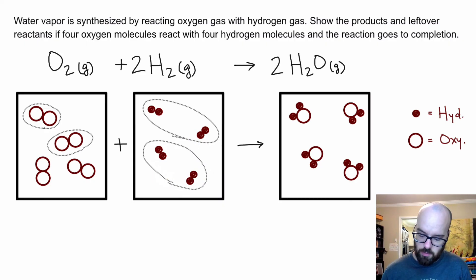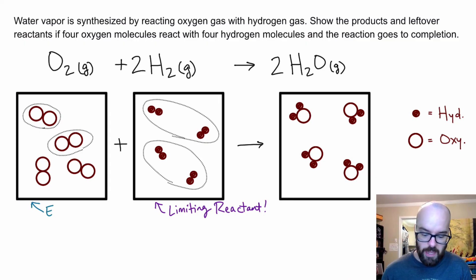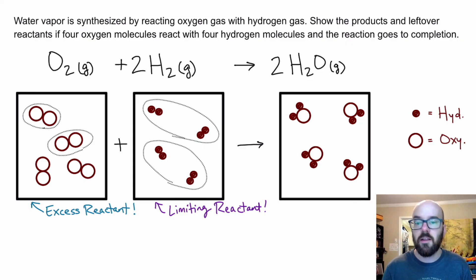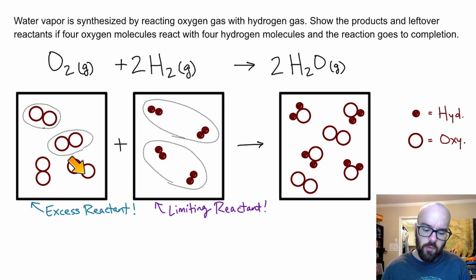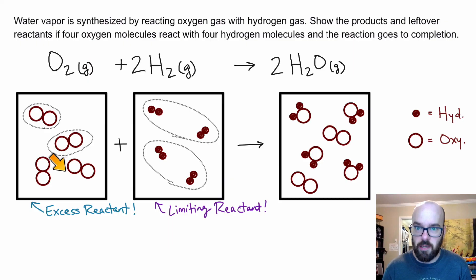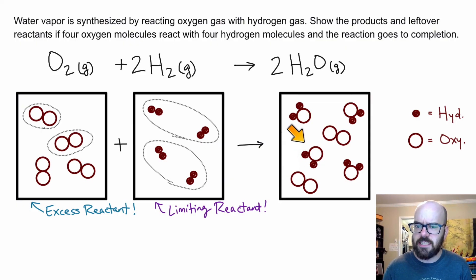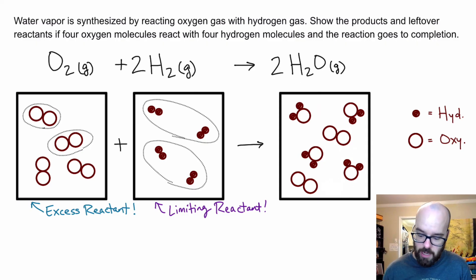Hydrogen is my limiting reactant because that's what stopped the reaction from going any further. Oxygen is the excess reactant — sometimes a problem will say something is 'added in excess,' meaning it's the excess reactant and the other is the limiting reactant. Notice I've got two oxygen molecules left that didn't react — they're still present in the container, so we have to draw those as well. At the end we have water vapor and leftover oxygen gas.